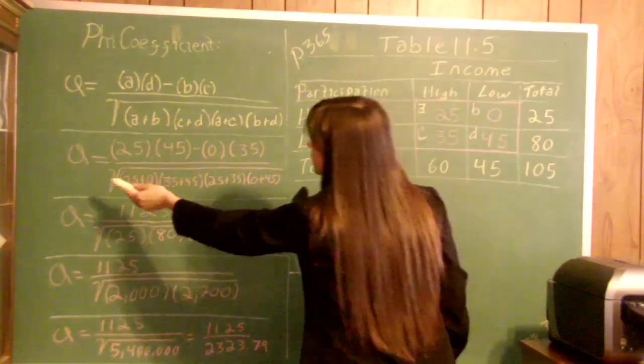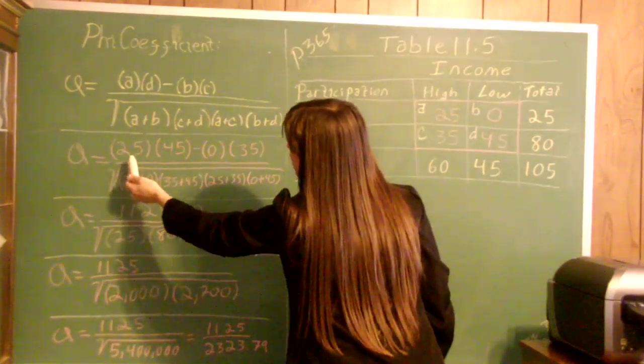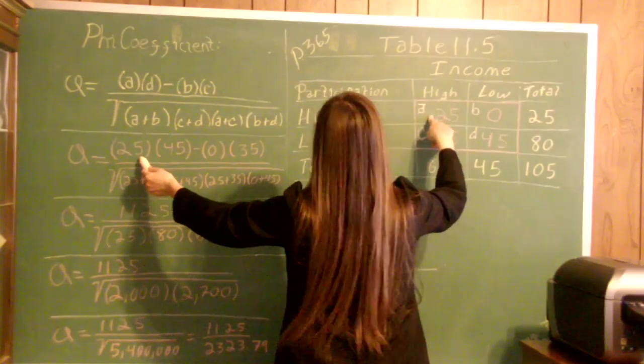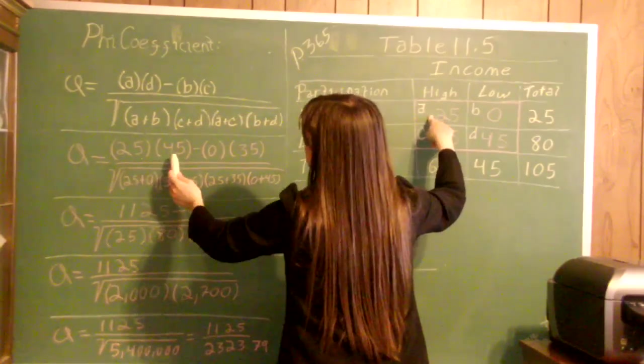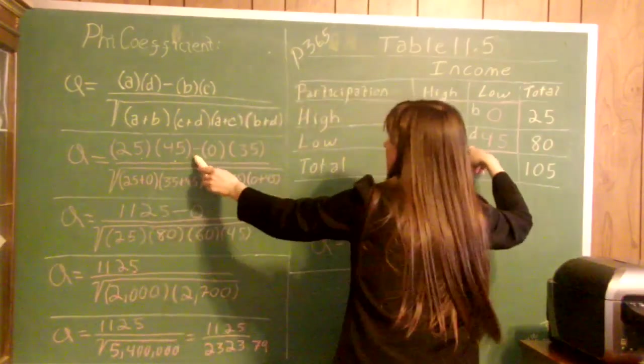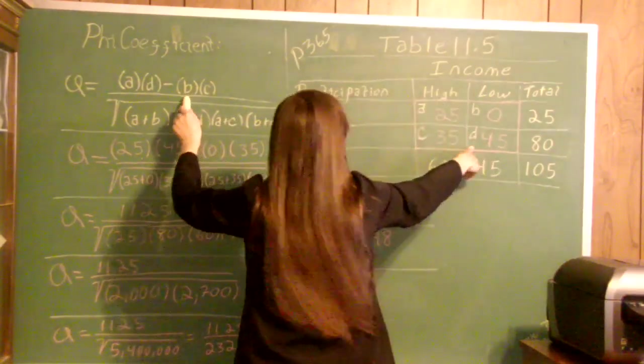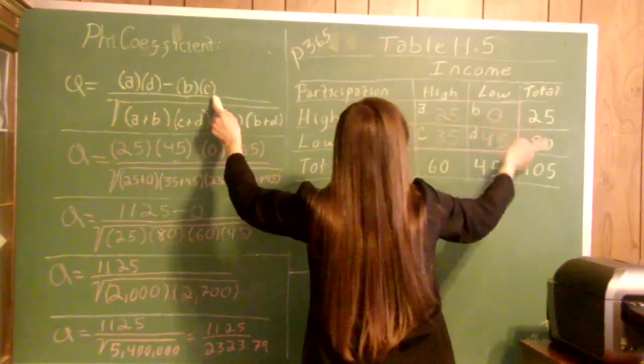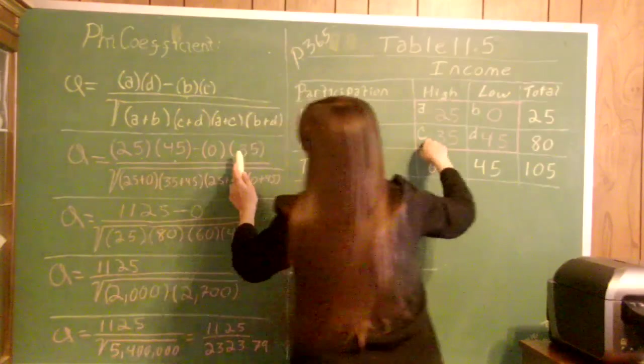Here, V equals A, which is 25, times D, which is 45, minus B, which is 0, times C, which is 35.